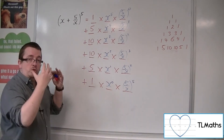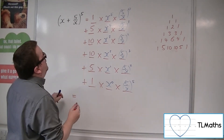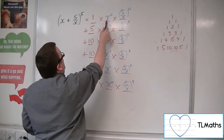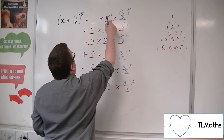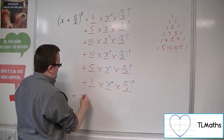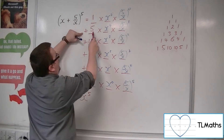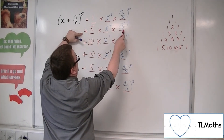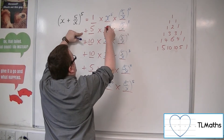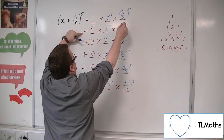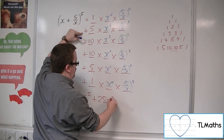Now my job is just to multiply this out and simplify. For the first term, we've got 1 times x to the 5 times (5/x) to the 0. That's just x to the 5. For the next term, we've got 5 times x to the 4 times (5/x). That x cancels with one of the x's, leaving x cubed. 5 times 5 is 25, so we get 25x cubed.